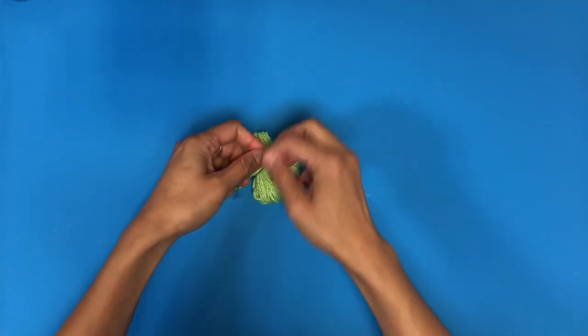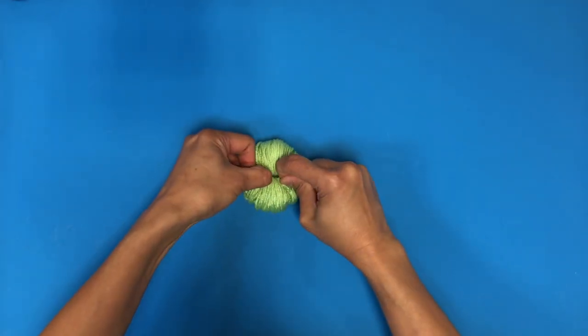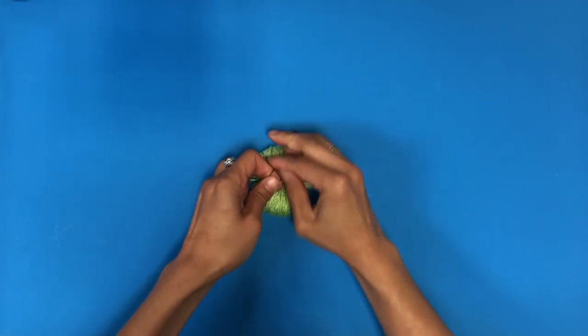Then you're going to flip your yarn bundle over and make your second really tight double knot. That first one is just functional, it should be tight but it doesn't have to be super tight. The second one should be very very tight.